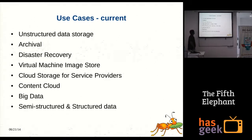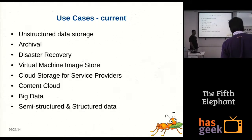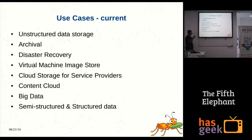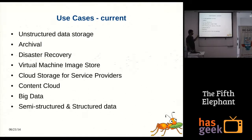The use cases of GlusterFS include: unstructured data storage like web data; archival — log archival or archival of any data; disaster recovery using the GeoReplication feature; virtual image storage; cloud storage for service providers; personal cloud when you have multiple devices you want to sync — for example, starting something on a mobile and continuing on a tablet; big data for semi-structured and structured data, where CassandraDB is one example; and email data — emails in JSON format.